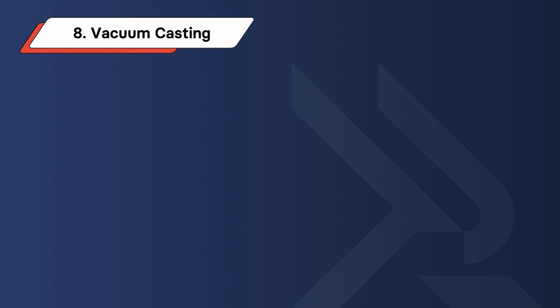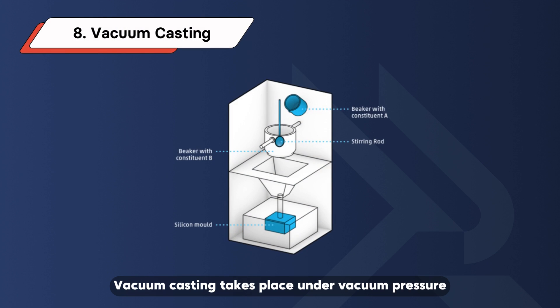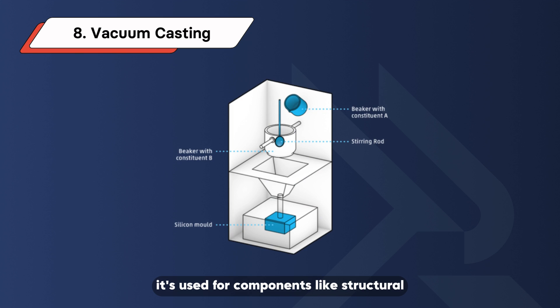Vacuum Casting. Vacuum casting takes place under vacuum pressure to eliminate bubbles and air pockets. It's used for components like structural chassis components and automotive body parts.